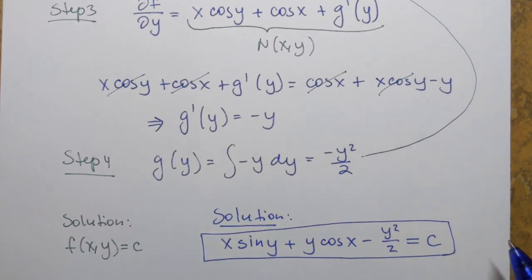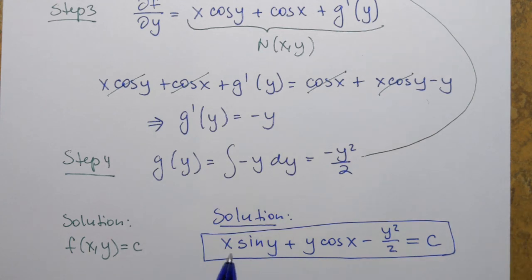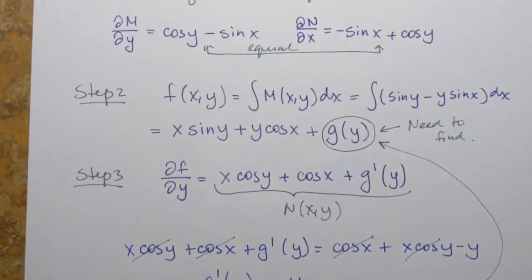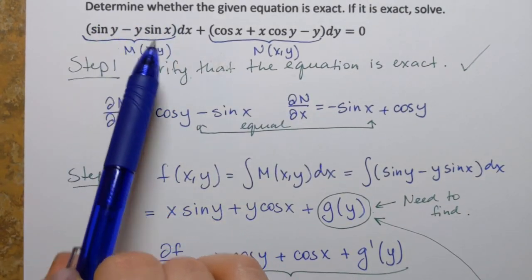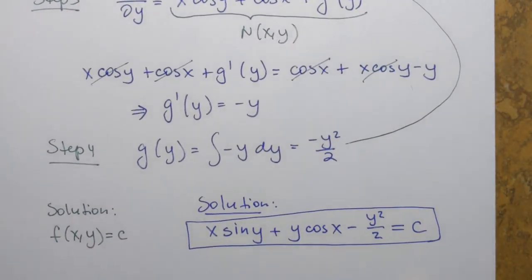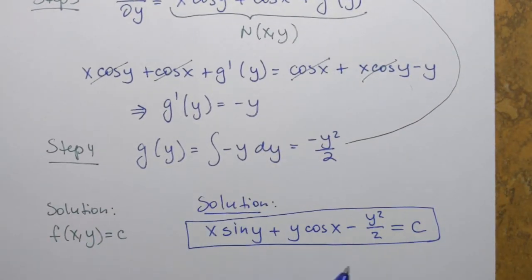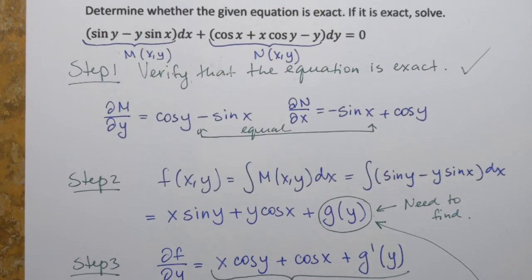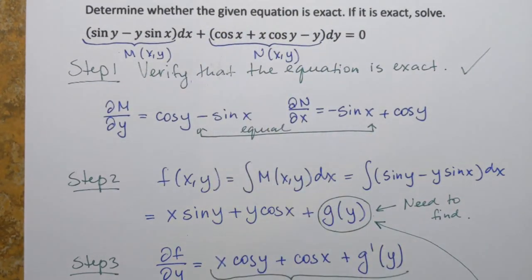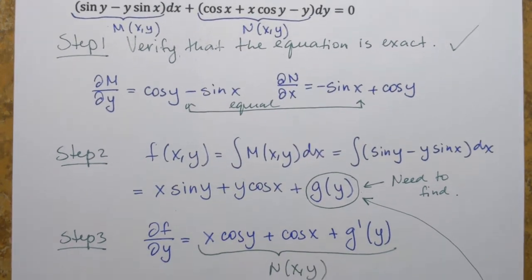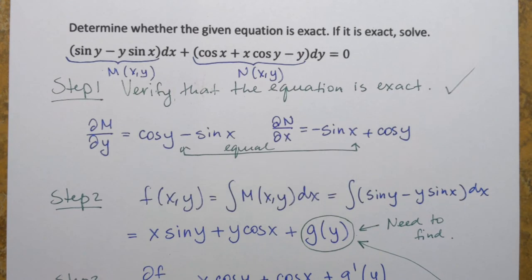We can always check the answer. If we take the partial derivative of the left-hand side of our solution with respect to x, we should obtain M of xy. And if we take the partial derivative with respect to y, we should obtain N of xy. I'll leave that for you to verify. Those are the steps for solving an exact differential equation.